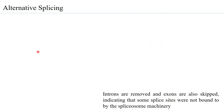Alternative splicing is such that introns can be removed and exons can also be skipped, or introns can be retained and exons skipped as well.